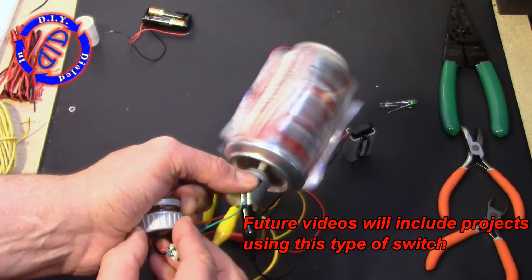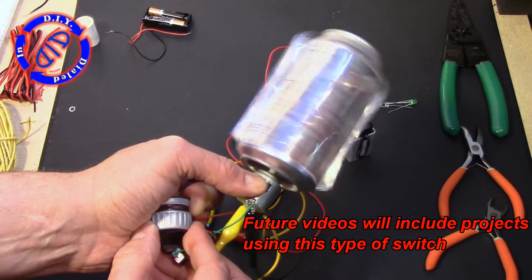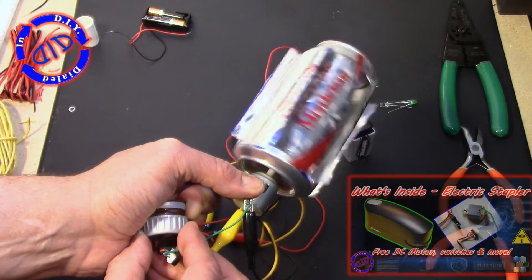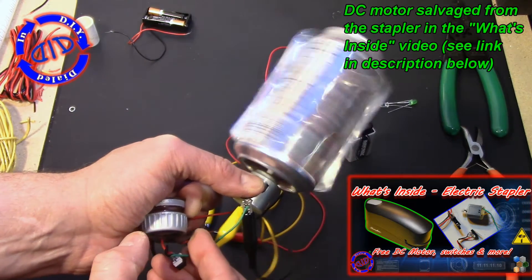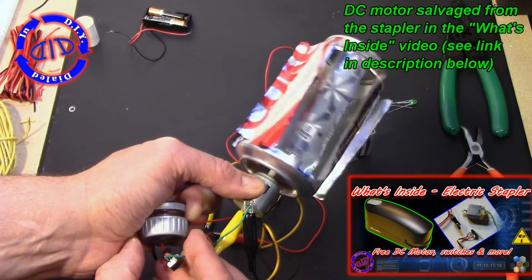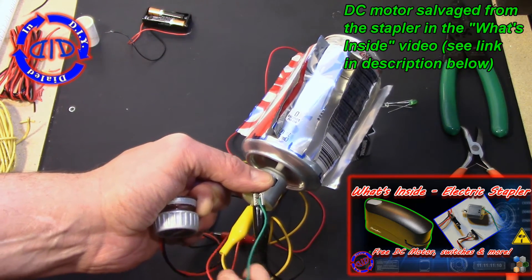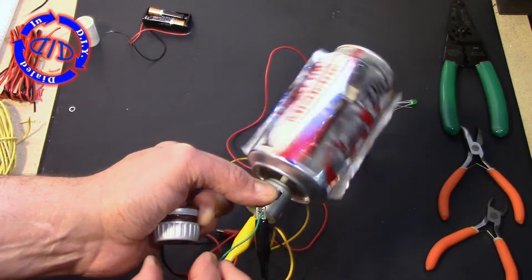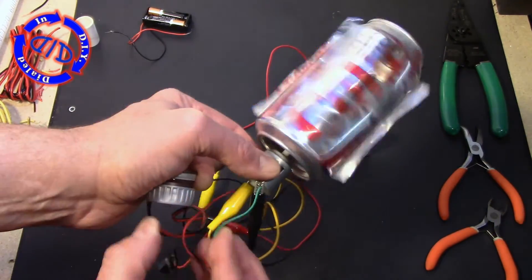So do you like our new homemade switch? Let me know in the comments below, I'd love to hear your feedback. I do love to repurpose materials for my projects and you'll notice that this particular DC motor actually came from a prior video in which I took apart an electric stapler to show you what was inside. The link for that video is in the description below if you want to watch.